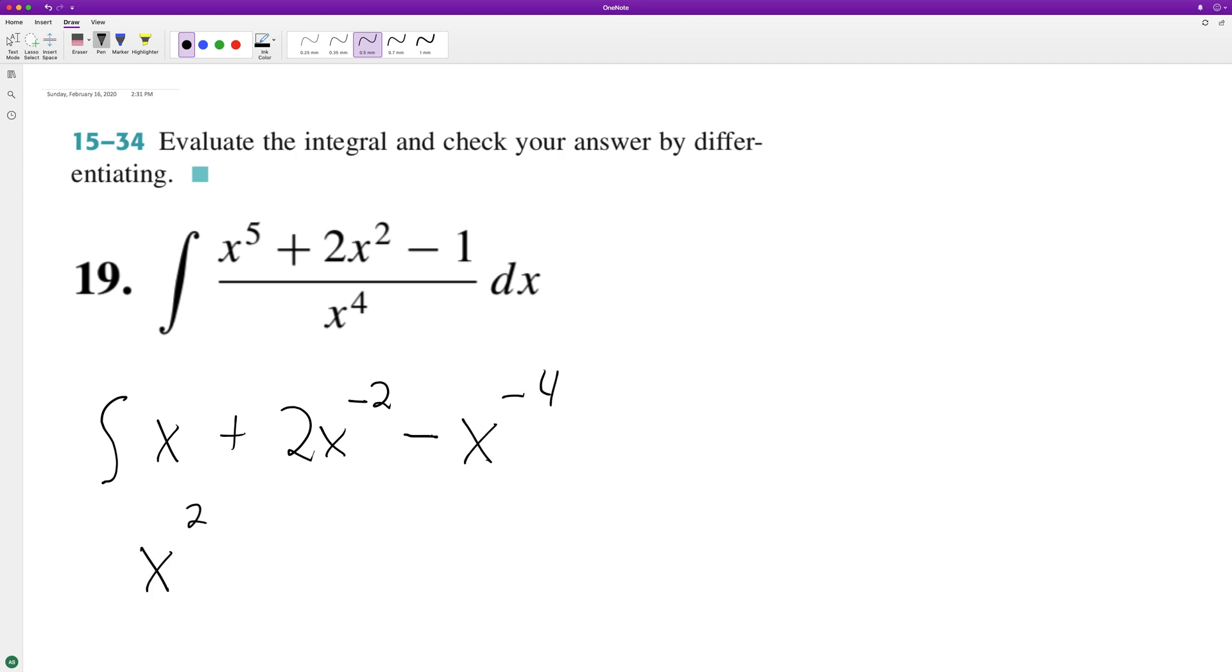So we integrate this, we get x squared over two, plus two x raised to the negative two, plus one, negative two, plus one, minus x raised to the negative four. Add one to that.